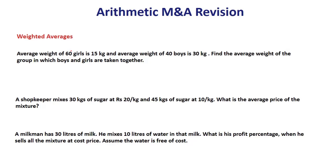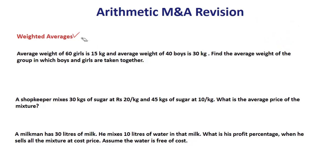First, let's talk about weighted averages. You already know simple averages — if you have two units, 10 and 12, simple average is 10 plus 12 divided by 2. You generally don't get questions on simple averages. So let's begin with weighted averages. The average weight of 60 girls is 15 kg and average weight of 40 boys is 30 kg. Find the average weight of the group.